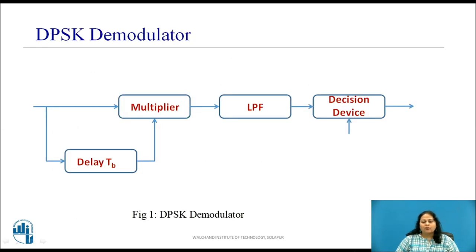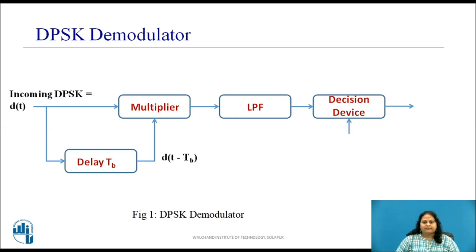Let us now see how this DPSK signal is demodulated. The figure shows the block diagram of the DPSK demodulator. The incoming DPSK signal D(t) is applied to one input of the multiplier, and to another input of the multiplier the incoming signal delayed by one bit duration is applied. The output of the multiplier is the product of the incoming signal with its previous received signal. This product is then applied to a low pass filter which blocks the high frequency components and gives a DC component at the output, say L.